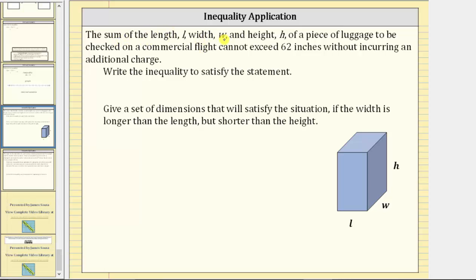The sum of the length L, width W, and height H of a piece of luggage to be checked on a commercial flight cannot exceed 62 inches without incurring an additional charge. Write the inequality to satisfy the statement.